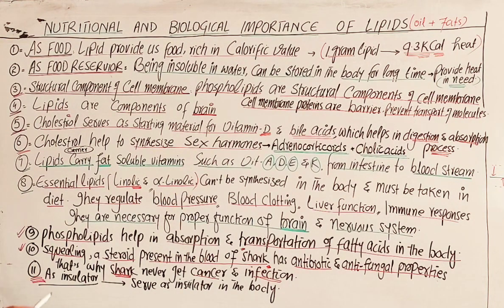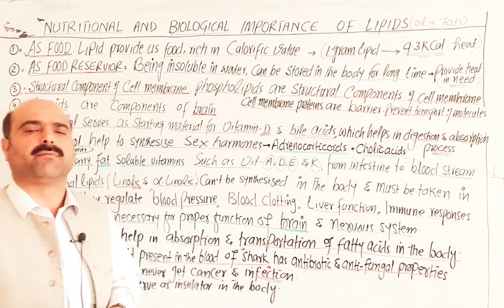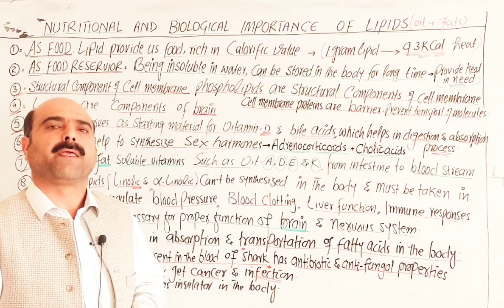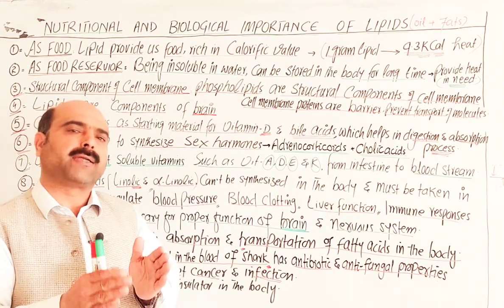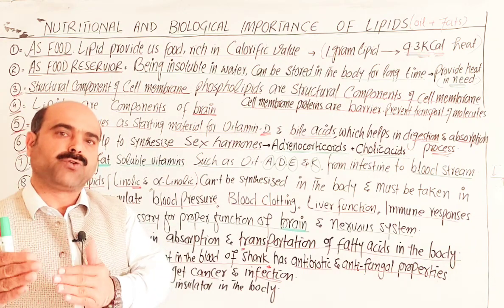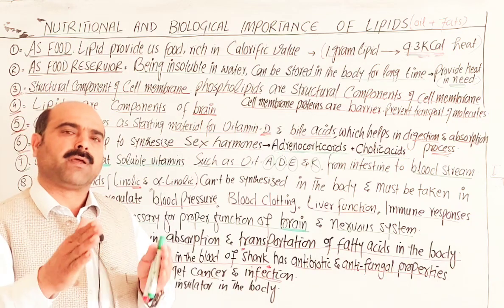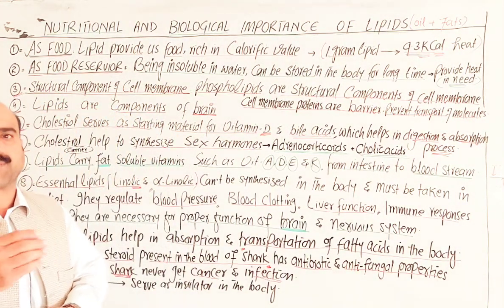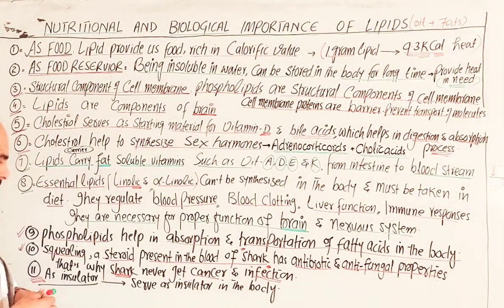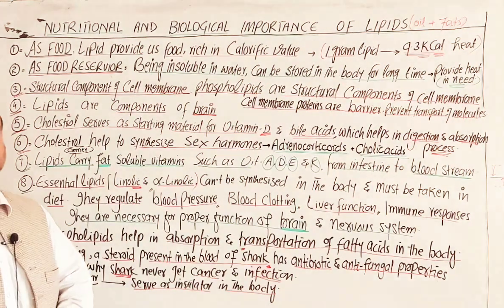The last point: lipids act as insulators. Fats in the body act as heat insulators — they prevent the body from losing heat to the outside and prevent outside cold from entering. In cold areas, animals such as whales have large amounts of fat. These fats ensure that the energy produced by respiration and oxidation inside the body is not lost to the outside, even in near-zero temperatures. Subcutaneous fat beneath the skin also acts as a heat insulator in the body.